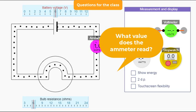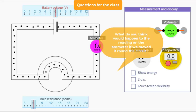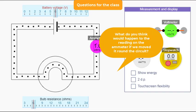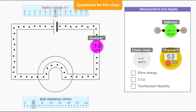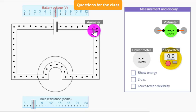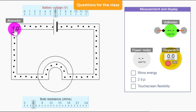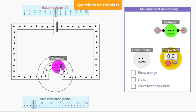What value does the ammeter read? One ampere. What do you think would happen to the reading on the ammeter if we moved it around the circuit? It would stay the same. The current is the same everywhere around the circuit.